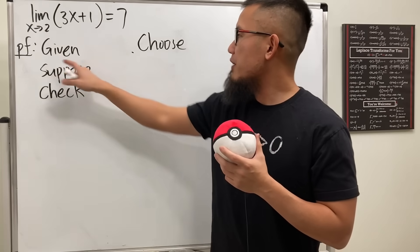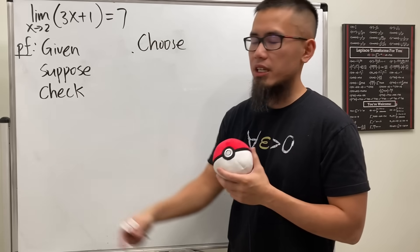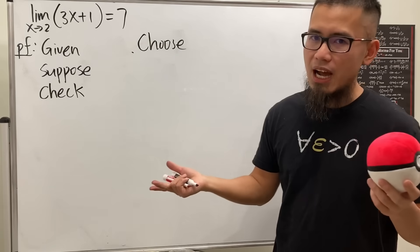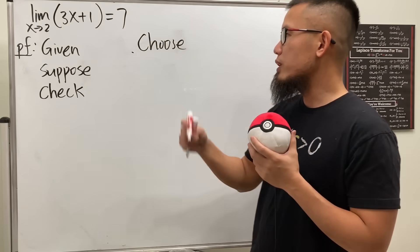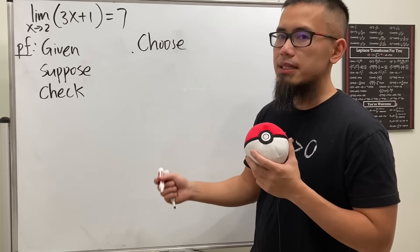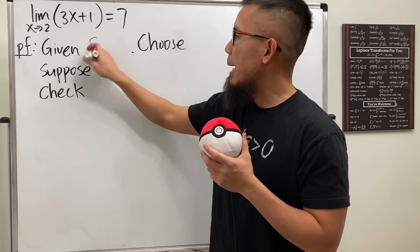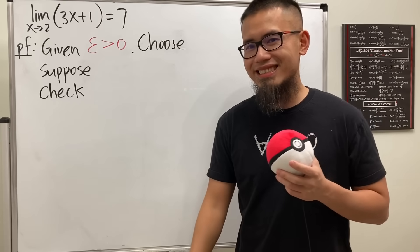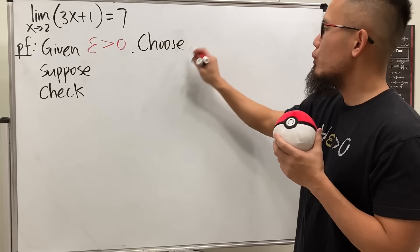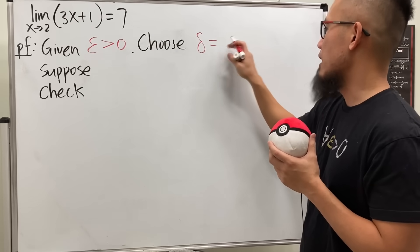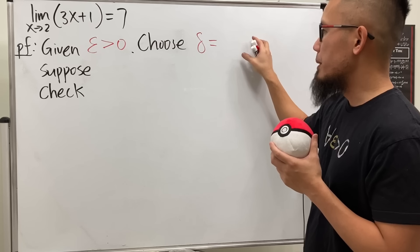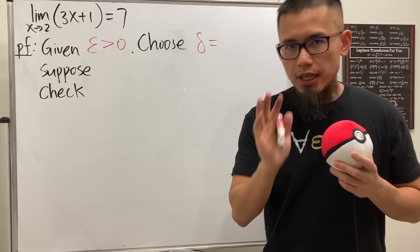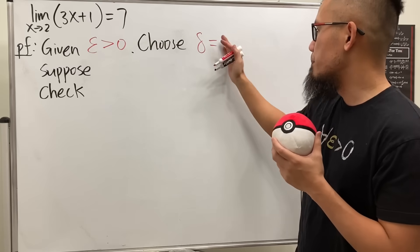Write down: given, choose, suppose, and check — use this format. When doing the epsilon-delta definition of a limit, you always start with 'given epsilon is greater than zero,' and that's exactly what I have on my shirt. Then you say 'choose delta to be something' — this should be based on epsilon, but unfortunately we don't know what it is at the moment, so just leave it blank for now.